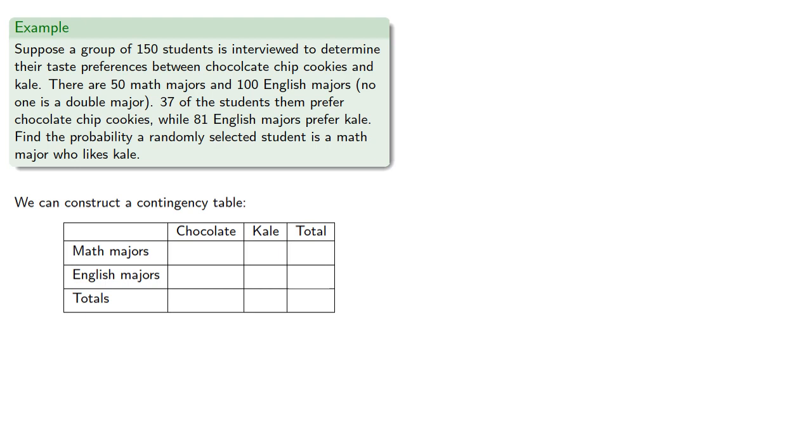It's helpful to extend the table to include the totals as well. Now, when constructing a contingency table, the most important thing to remember is: the book's got a balance. In other words, all of our totals have to be consistent with the given information. So the total of all students is 150, those are the English and math majors and the chocolate and kale preferrers.